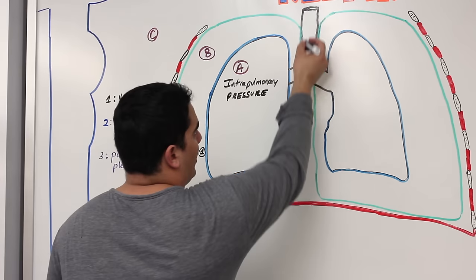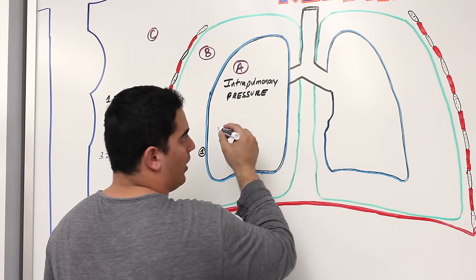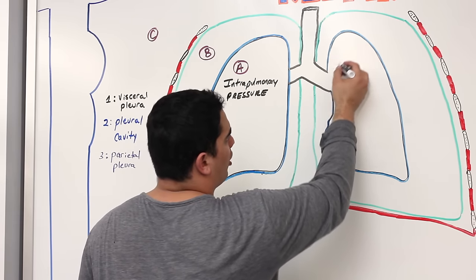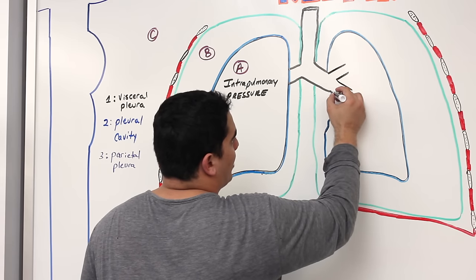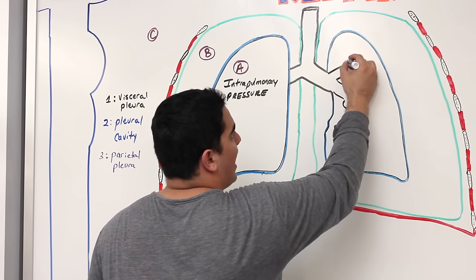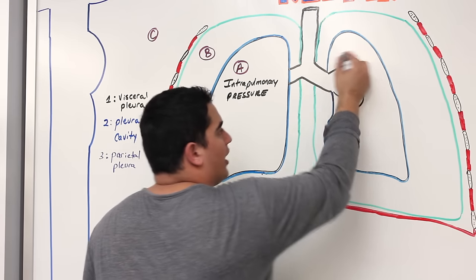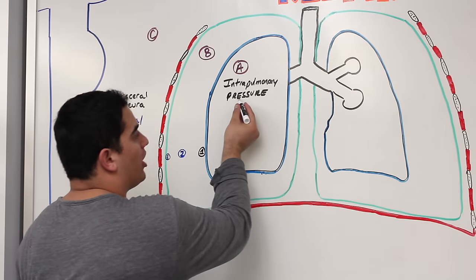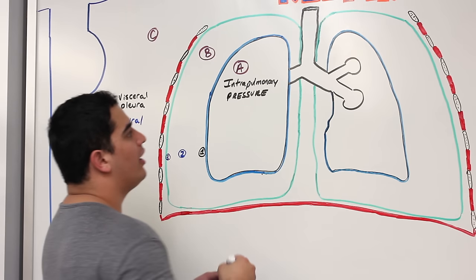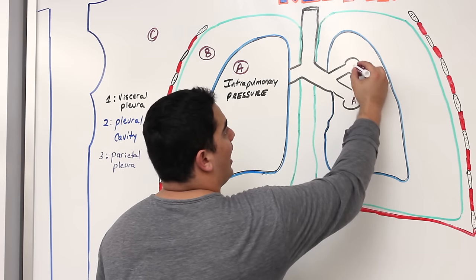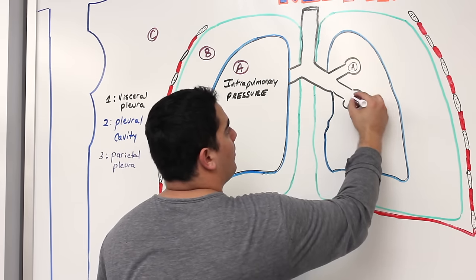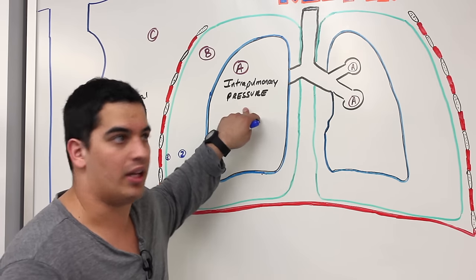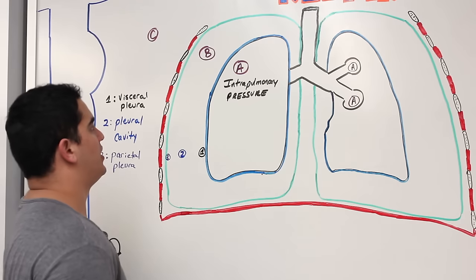Why intra-alveolar? The trachea gives way to the bronchi, then secondary, tertiary, down to terminal bronchioles, and then branches out to small grape-like structures called the alveoli. So when I say intrapulmonary pressure, I really mean the pressure within the alveoli — the intra-alveolar pressure. That's the A pressure.